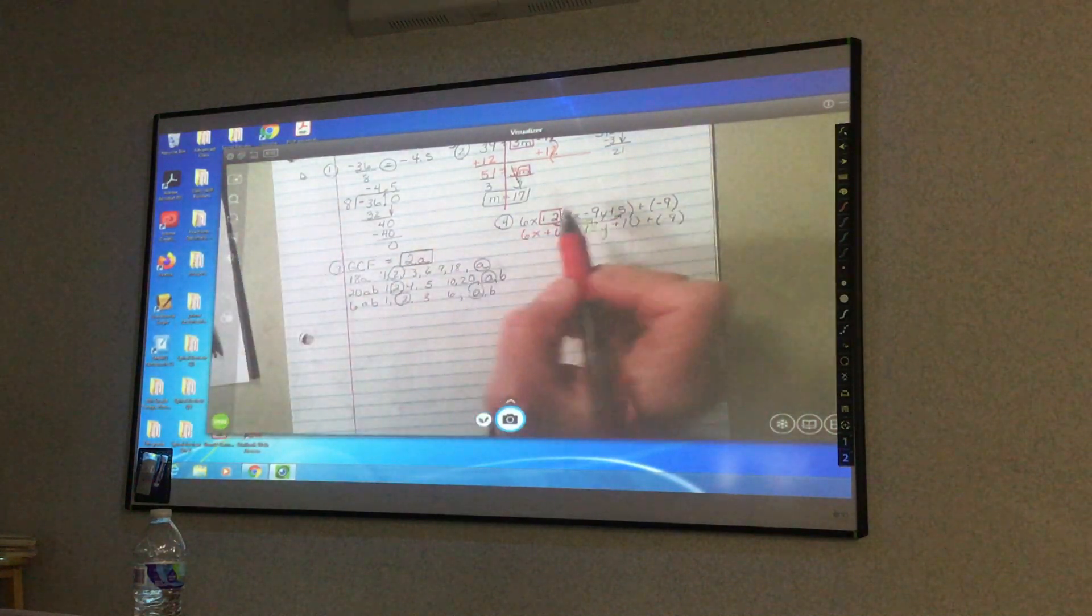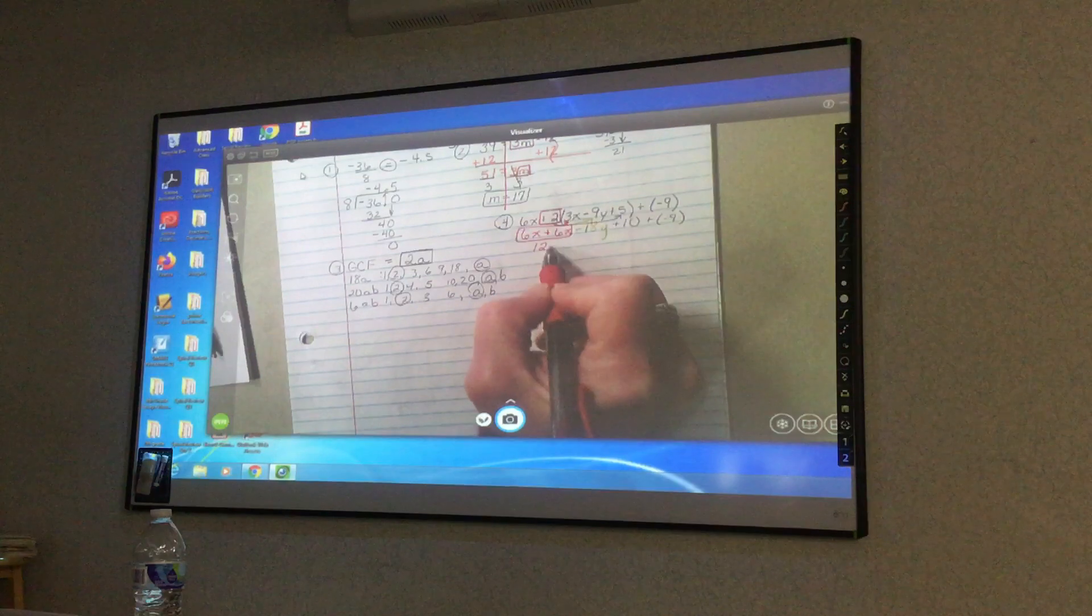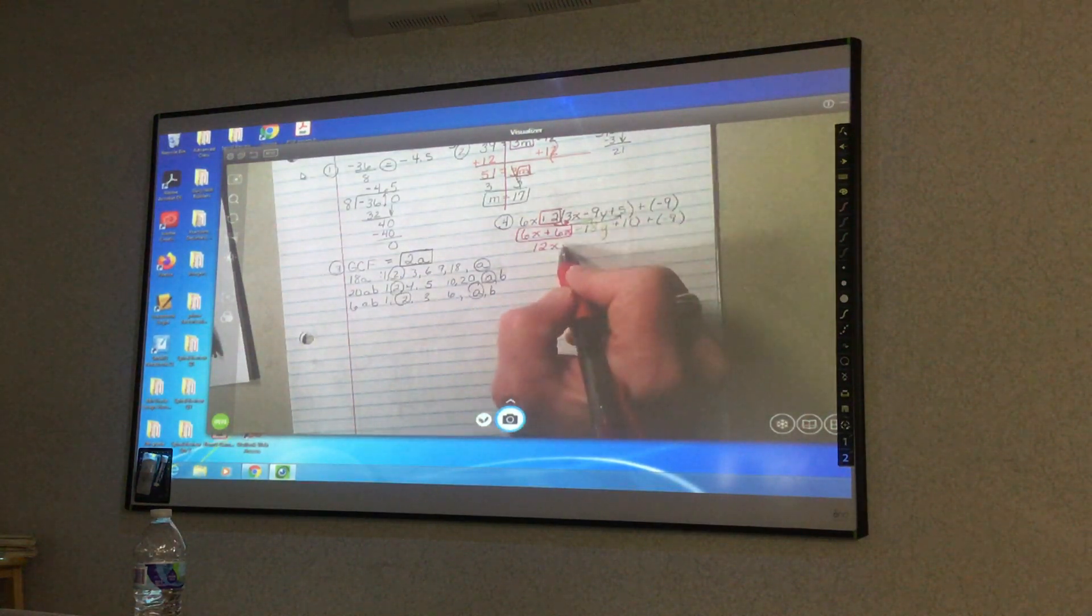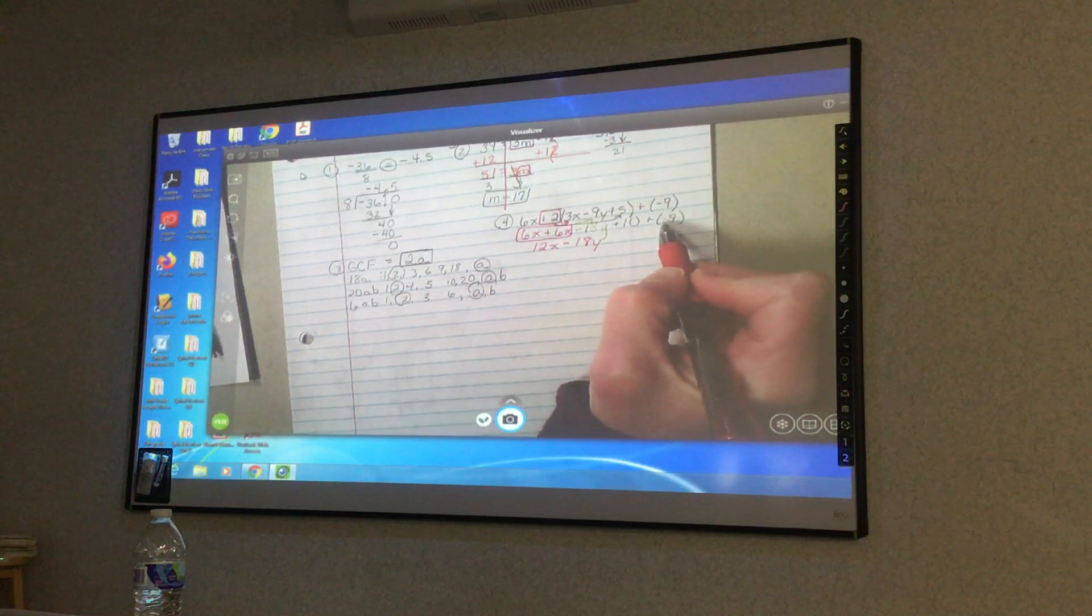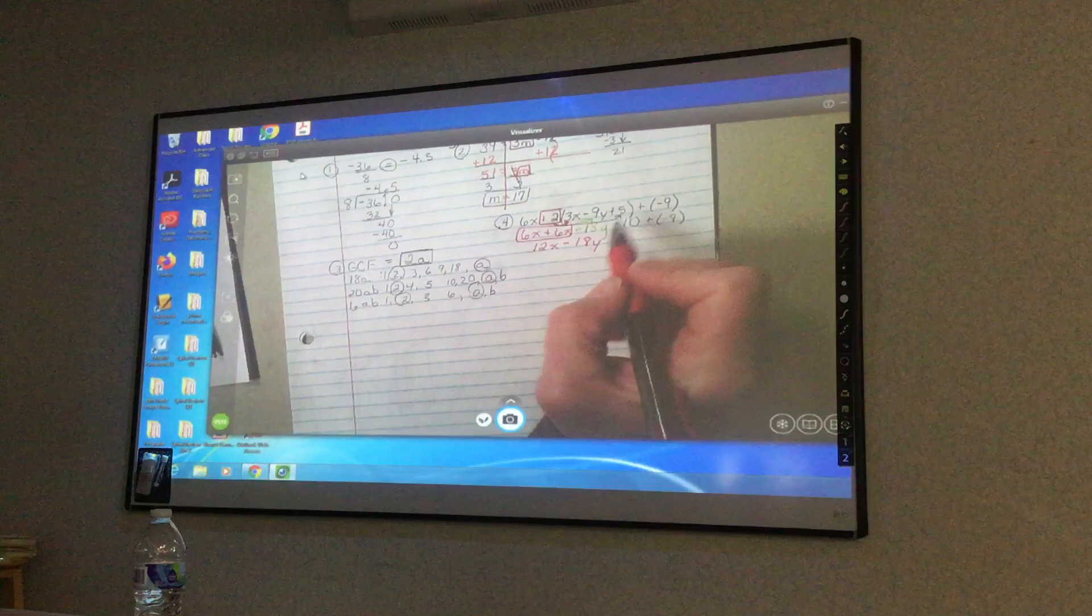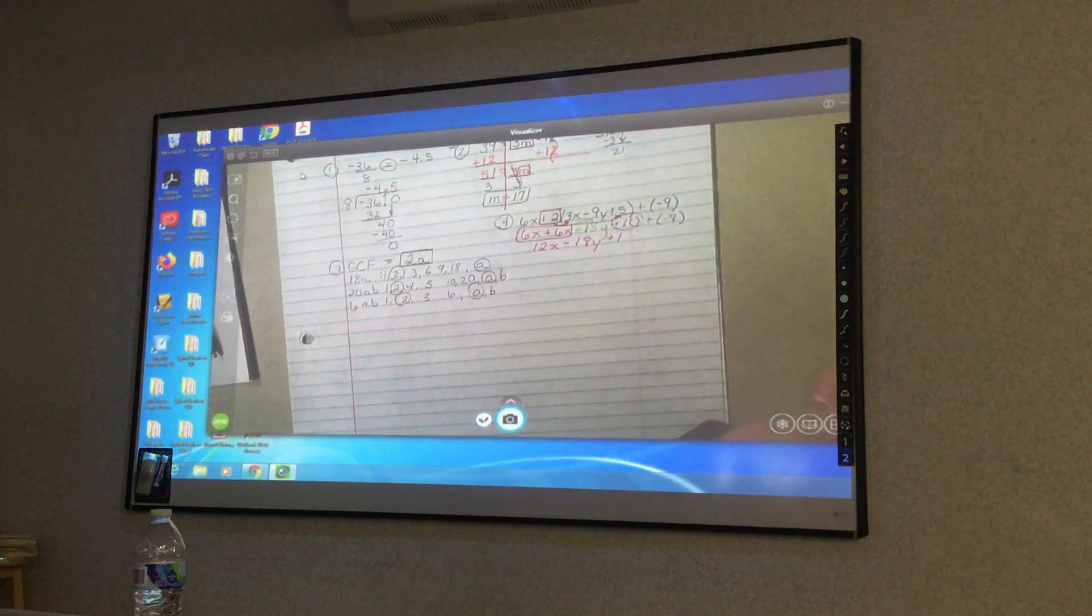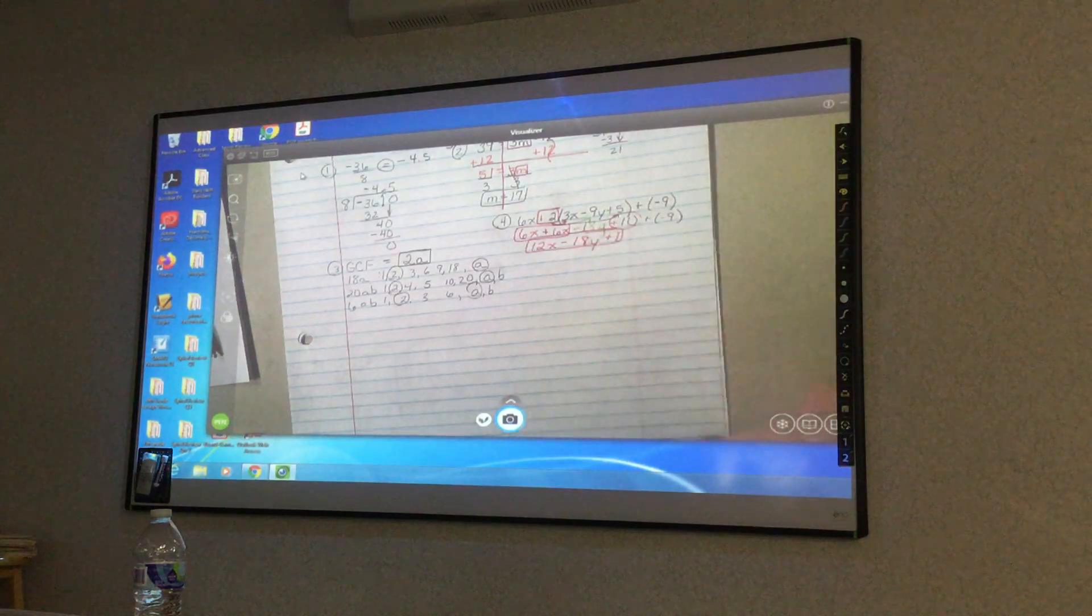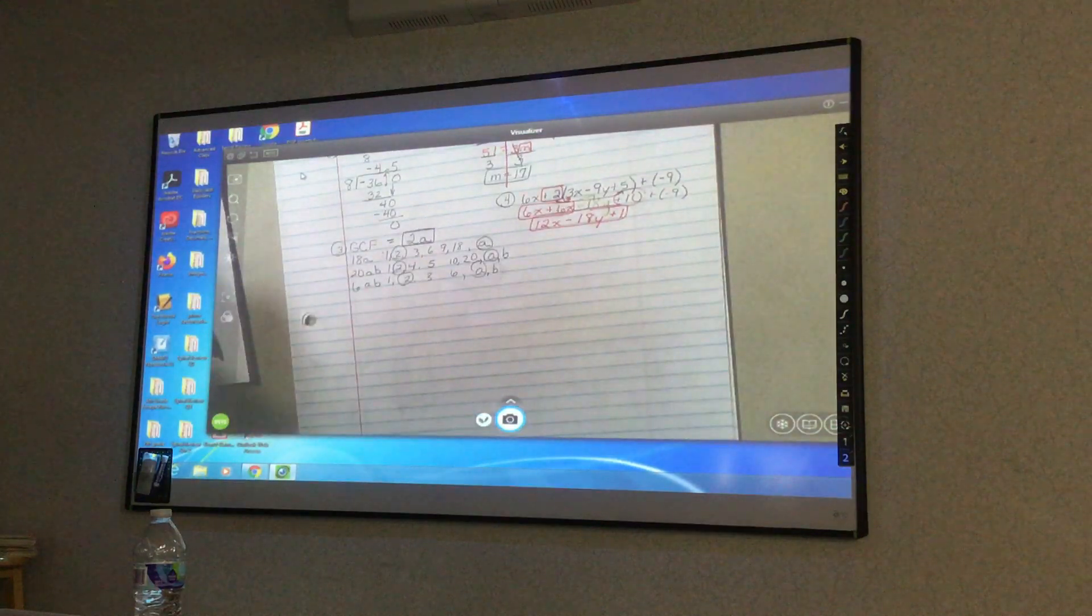Then I have positive 2 times positive 5, which becomes positive 10 plus negative 9. Now I'm going to combine what I have in common. Positive 6 and positive 6 makes positive 12x. Do I have anything with y? No. So it just stays negative 18y. Positive 10 and negative 9, you subtract. It's 1 and it's going to stay positive because the bigger number is positive. How many of you got number 4 right? There should be a lot of markings on your paper.